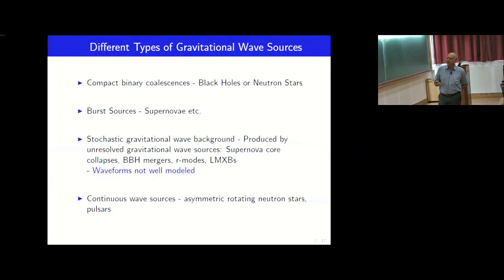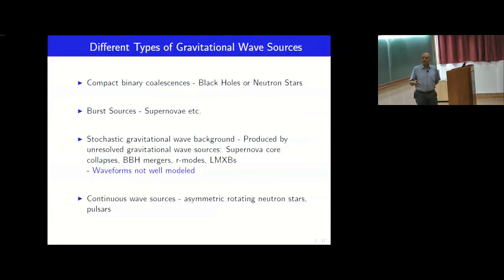And then there are continuous wave sources like asymmetric rotating neutron stars, like LMXBs, things in LMXBs. And the most, I think the source which has been most studied I think is Sco X-1. I think we have one of the experts here, Chris Messenger.